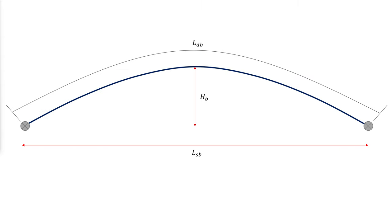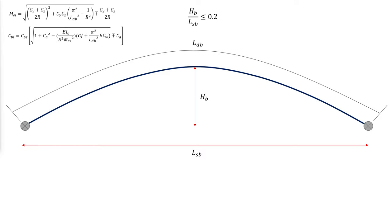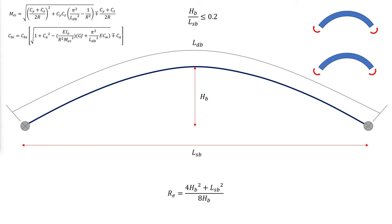For parabolically curved doubly symmetric members with HB over LSB less than or equal to 0.2, the lateral torsional buckling strength is similar to that of circularly curved members, and an equivalent radius RE can be calculated accordingly. Although this method is accurate only when HB/LSB ≤ 0.2, it can provide a conservative estimate for members with opening moments when HB/LSB > 0.2. For members with closing moments and HB/LSB > 0.2, the equivalent radius method is unconservative, but a conservative estimate can be calculated using the equivalent straight member with length equal to LDB.